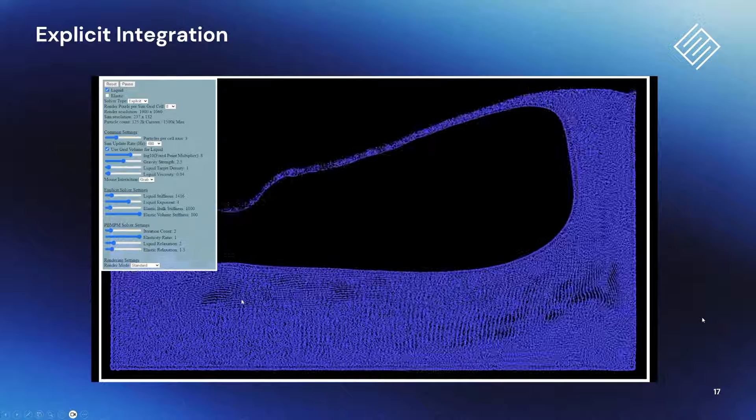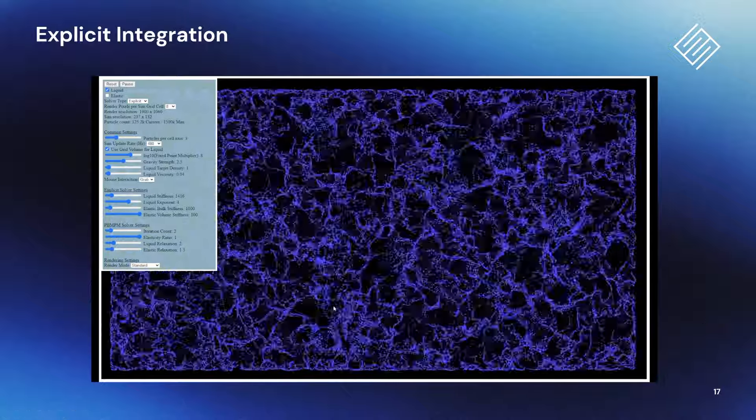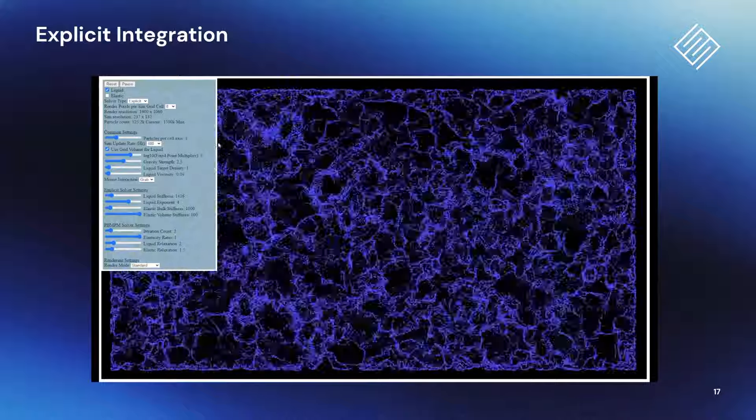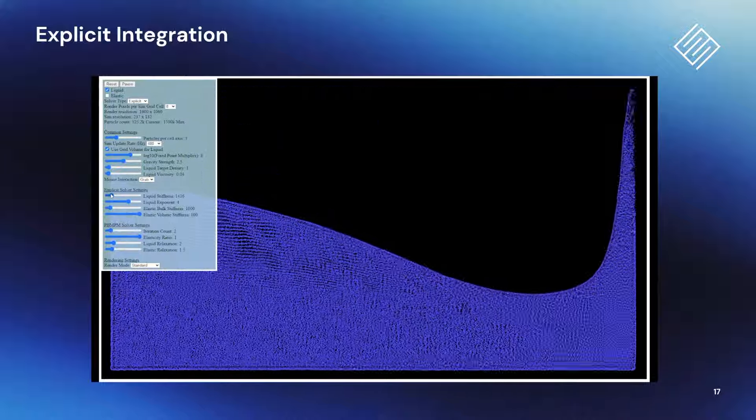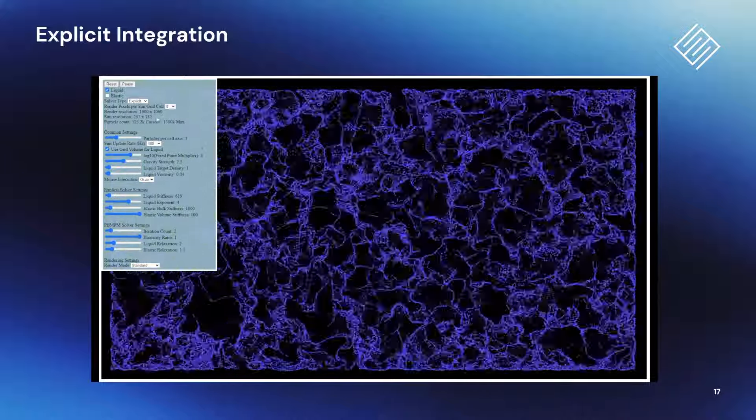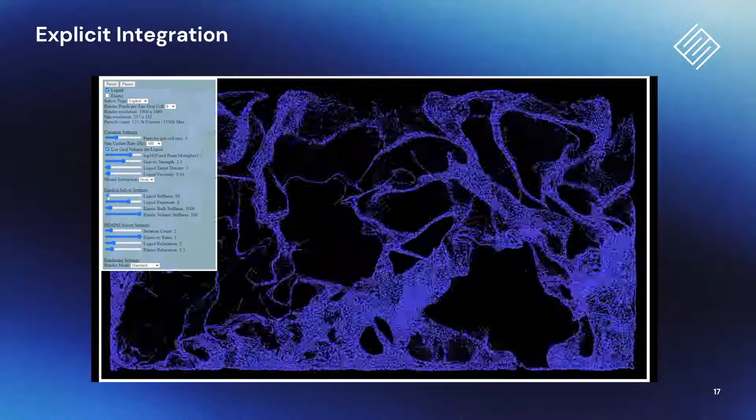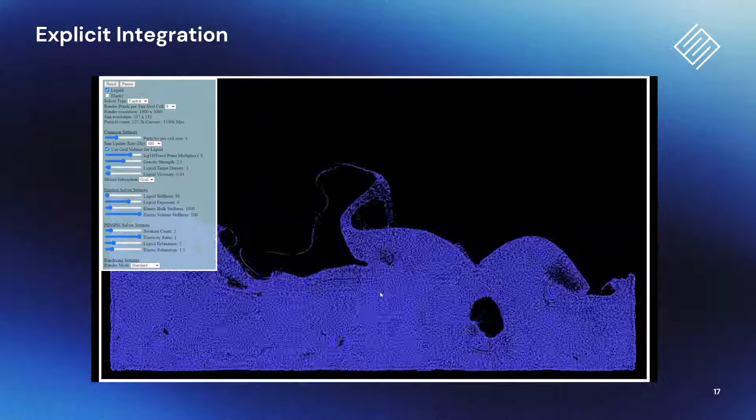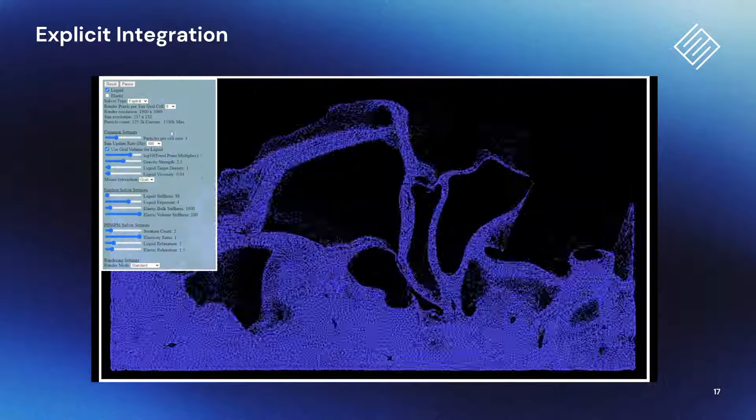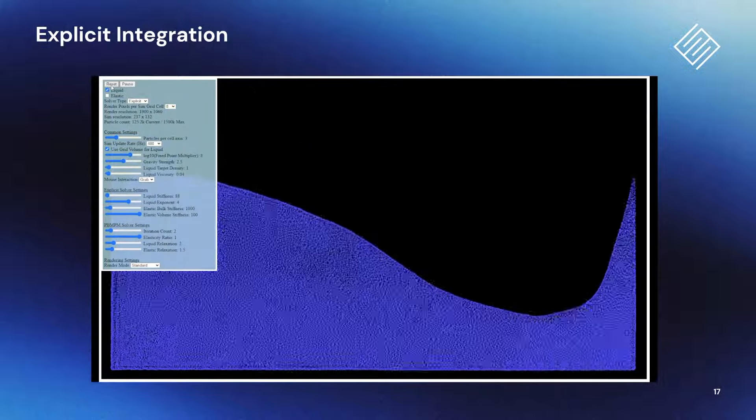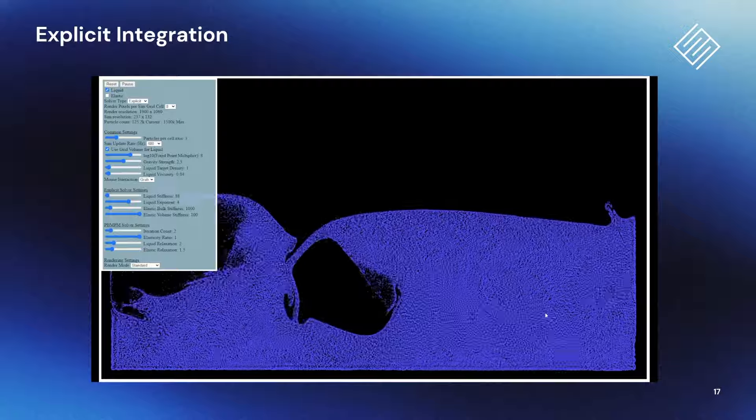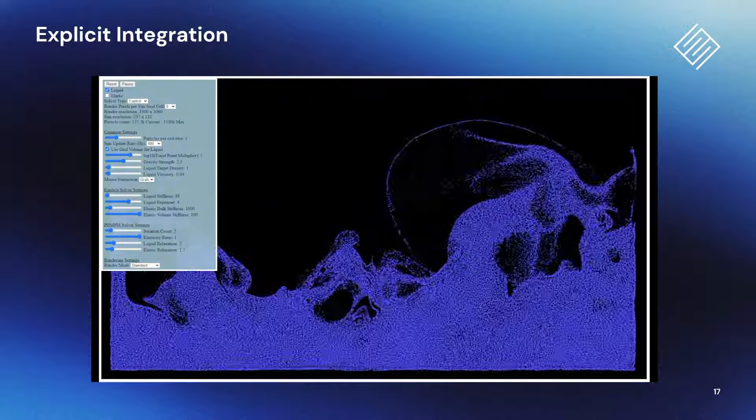Explicit integration is easy to implement, but it suffers from cascading explosions. This means we can require very small time steps to get stability. Explosions are particularly an issue when the user has some violent input into the simulation, like I'm doing with my mouse here. To get the stiff behavior we need many materials to have, we often need to make our forces quite nonlinear, and this further increases their susceptibility to exploding when some user interaction pushes them far away from equilibrium.